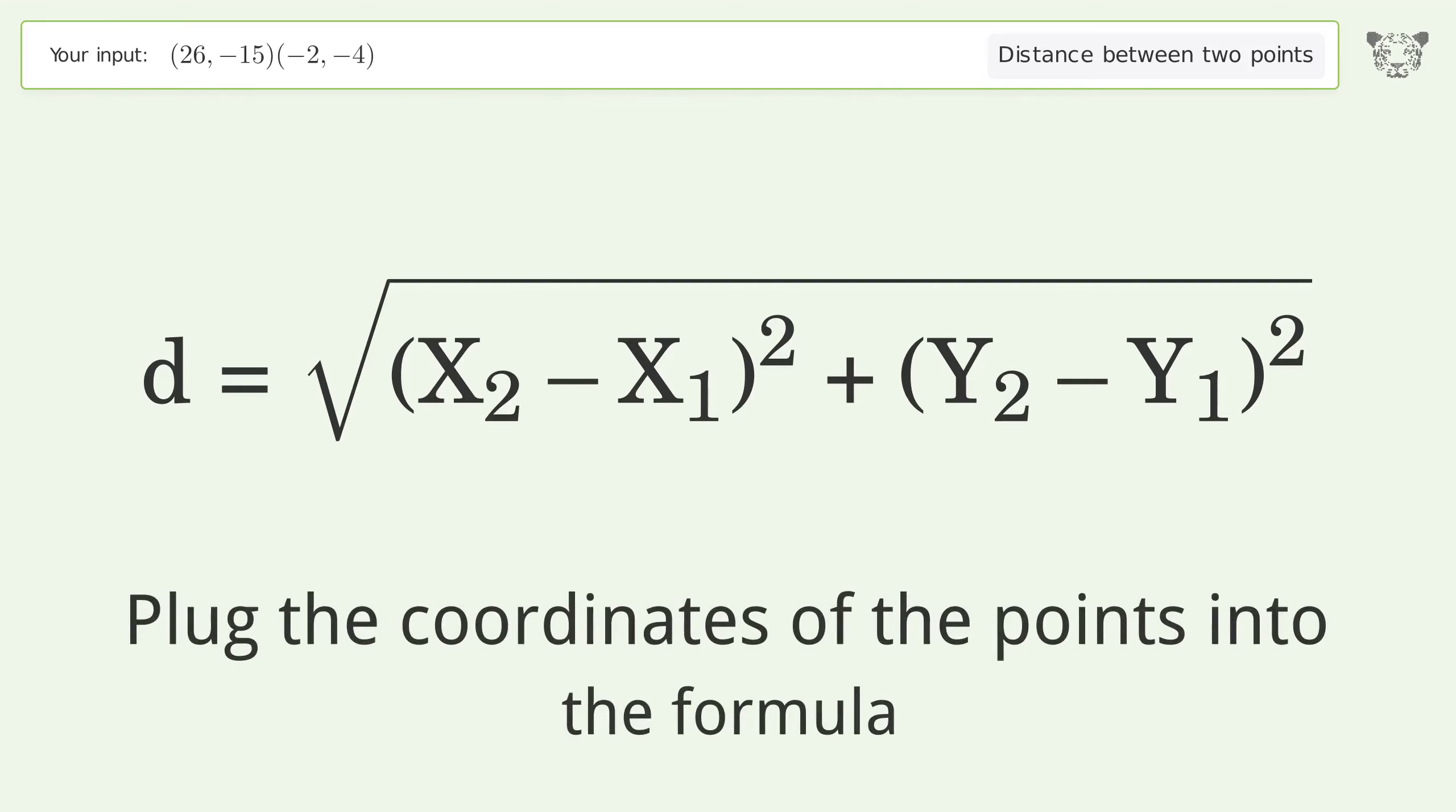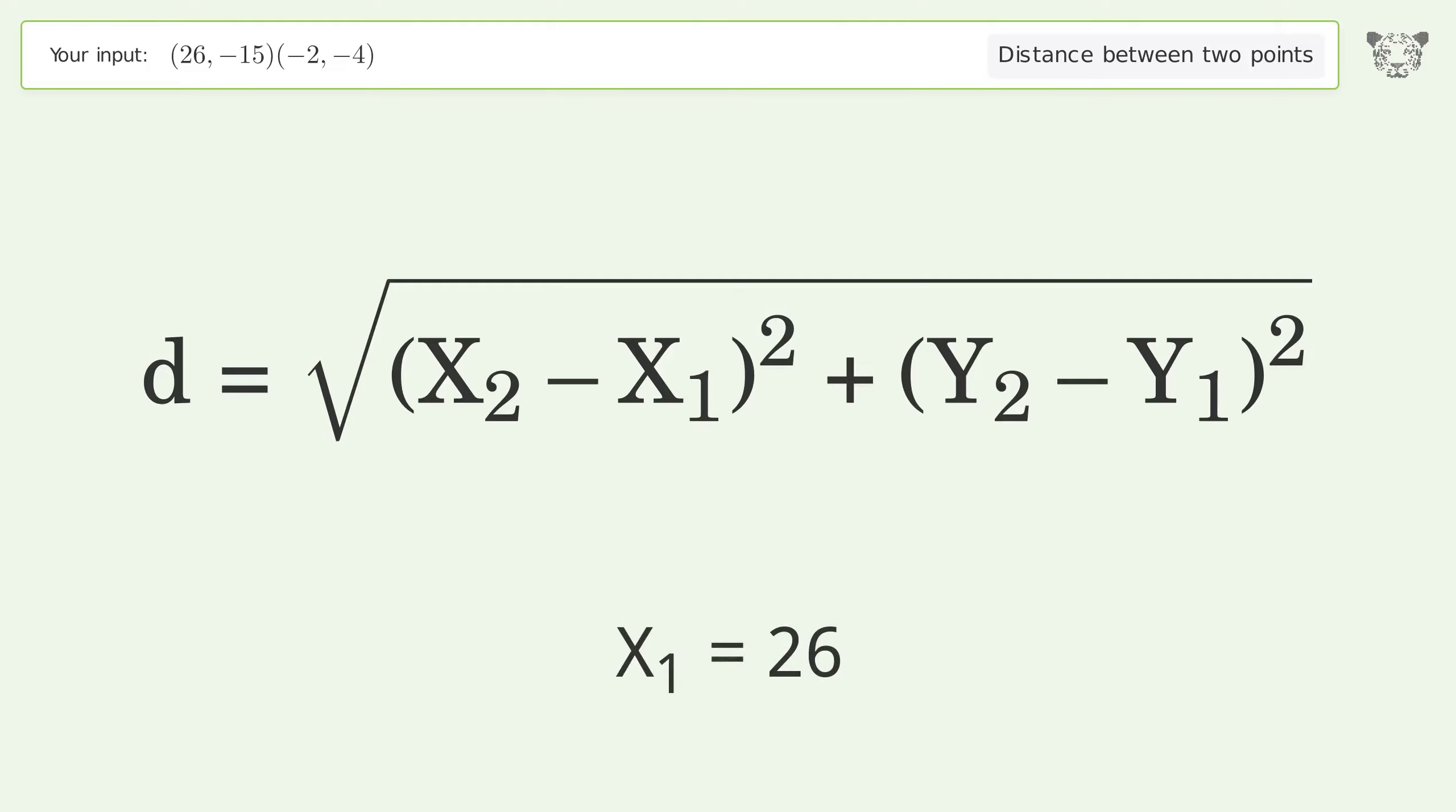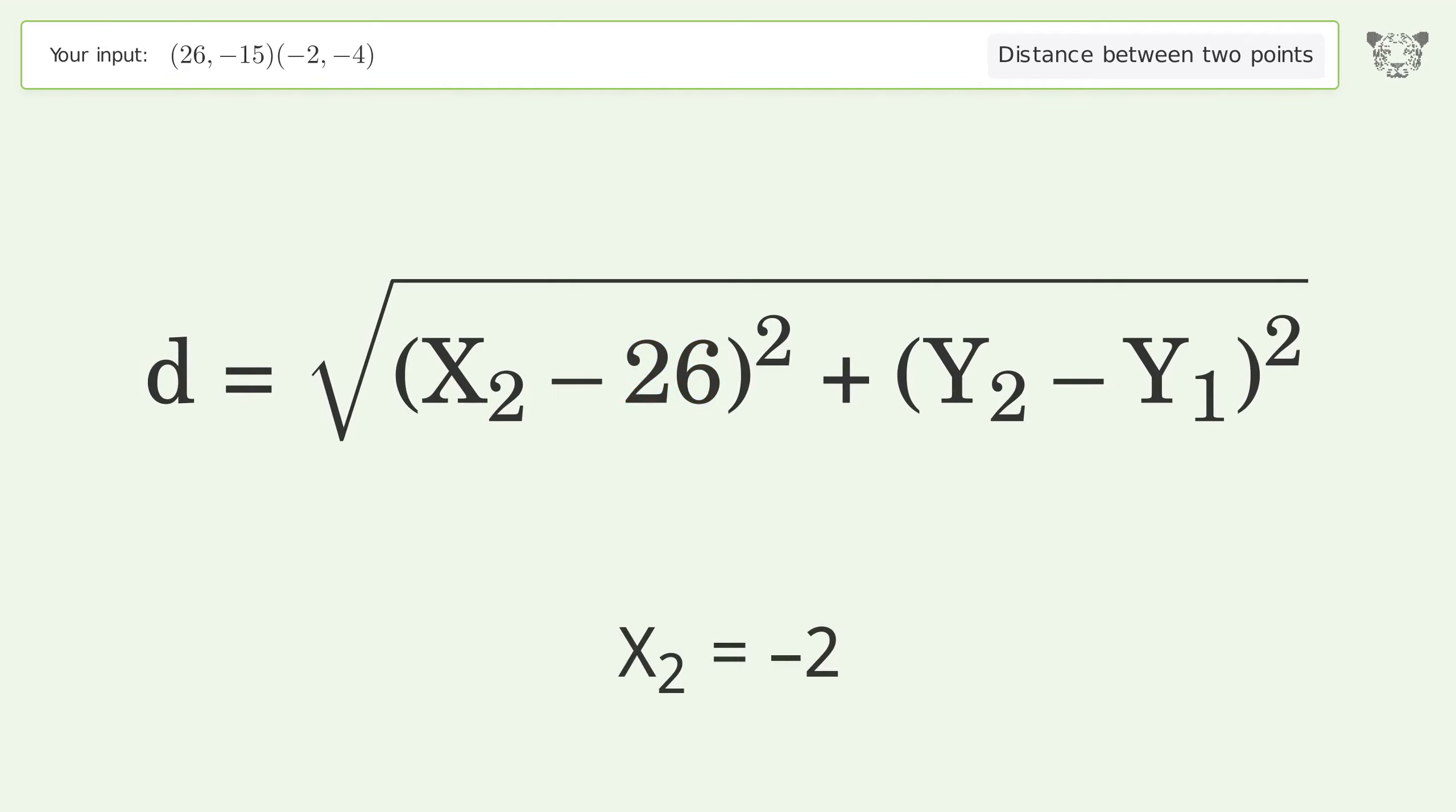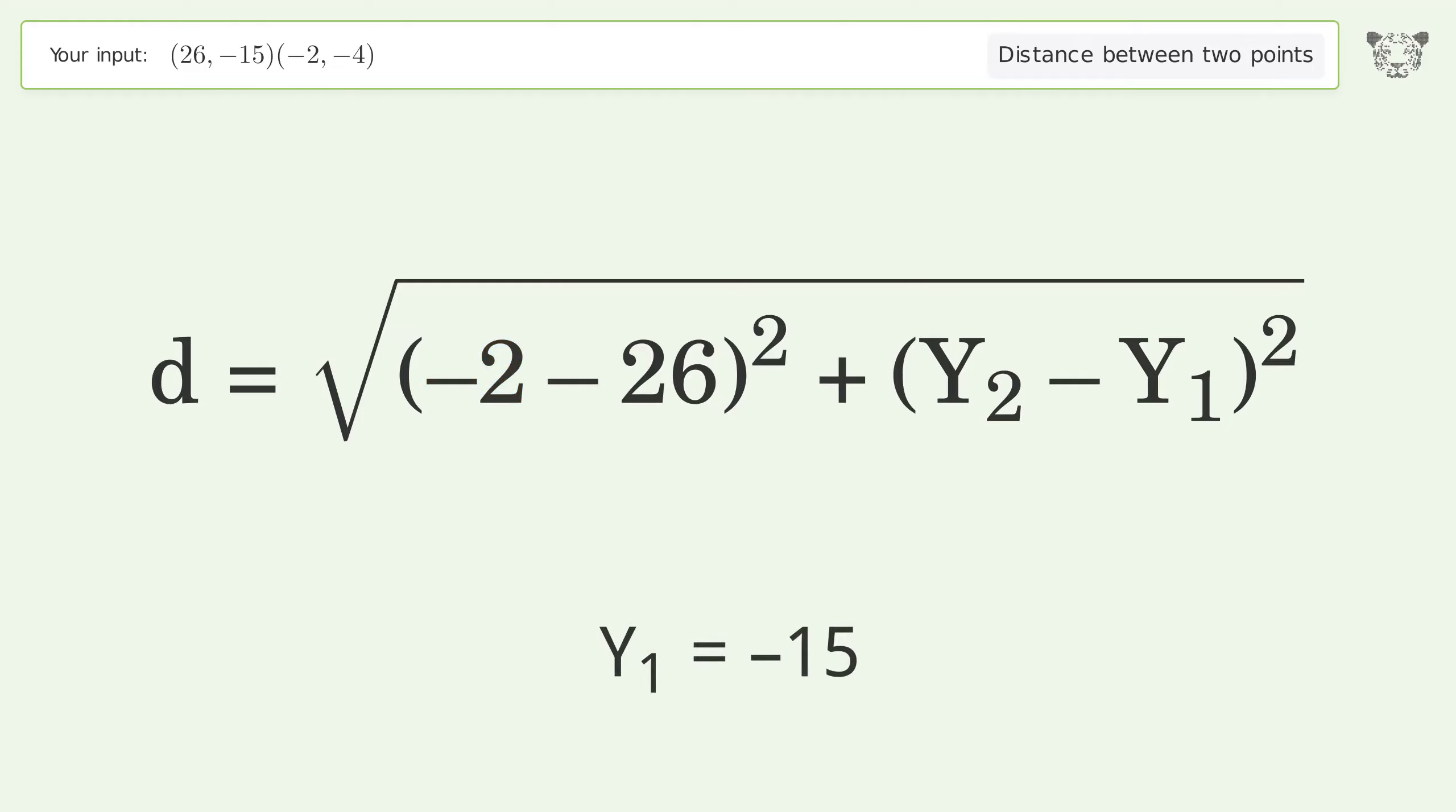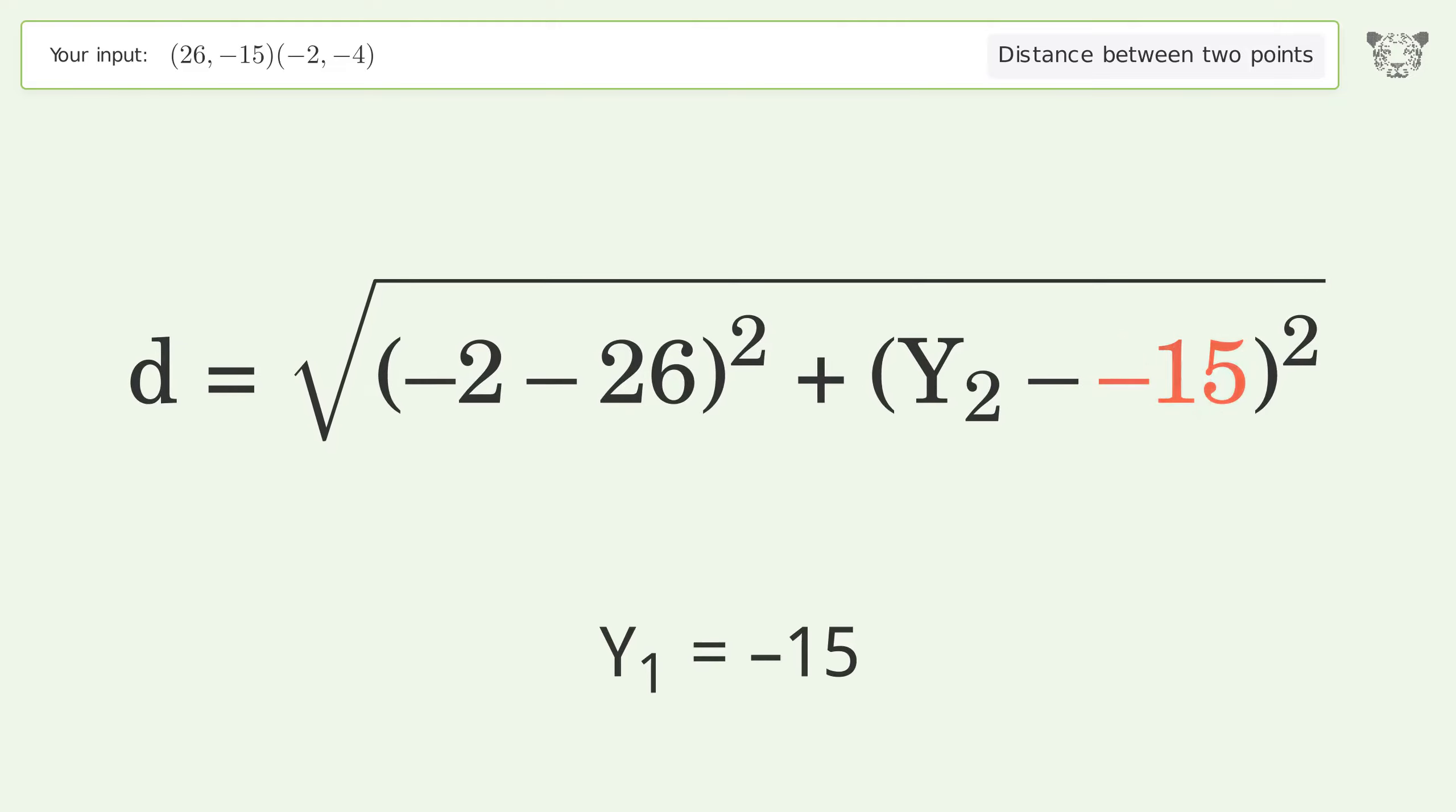Plug the coordinates of the points into the formula: x1 equals 26, x2 equals negative 2, y1 equals negative 15, y2 equals negative 4.